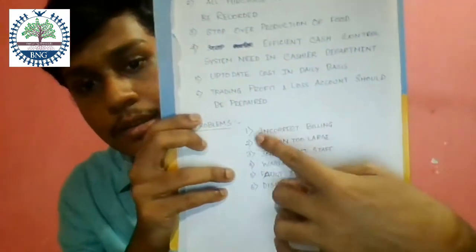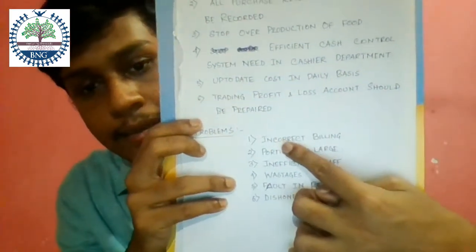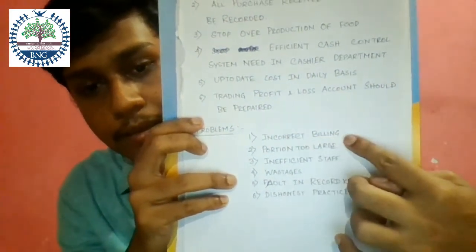Now, reasons for increasing food cost. The first reason is incorrect billing. For example, suppose the price of a particular dish is 70 rupees, but you print it on the bill as 7 rupees. Then discrepancies happen and food cost will be high.